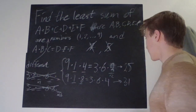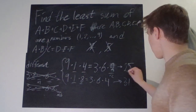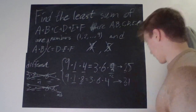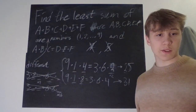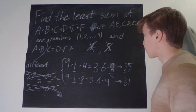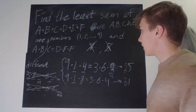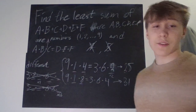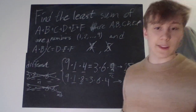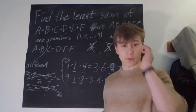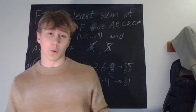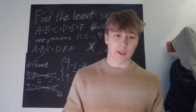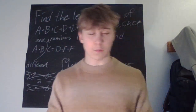So our answer is 25 — that is the least possible sum for a, b, c, d, e, and f. I hope this wasn't too confusing. That's all from me, bye!